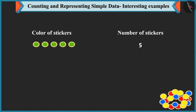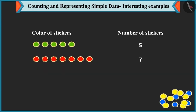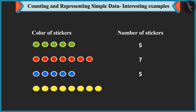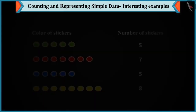Bubbly writes 7 against red stickers. She then counts 1, 2, 3, 4 and 5 blue stickers, writing 5 against blue. Finally she counts 1, 2, 3, 4, 5, 6, 7 and 8 yellow stickers, writing 8 against yellow stickers.